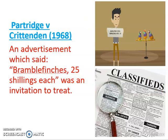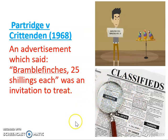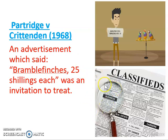Similarly, in Partridge and Crittenden, there was an advertisement in a newspaper — 'Bramble finches, 25 shillings each' — and that was held to be an invitation to treat, not an offer. When you see that advert, it's inviting you to make an offer which the person selling the bramble finches can then accept or reject. So things on supermarket shelves are invitations to treat, and adverts in newspapers or on eBay are going to be invitations to treat.